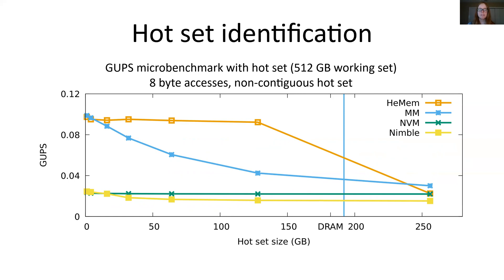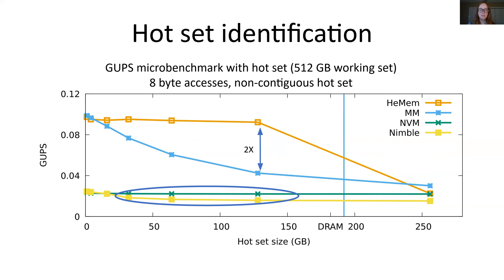This graph shows these results. On the y-axis is the average throughput in GUPS after the warm-up phase and the x-axis shows the size of the hot set. We see that HEMEM, plotted on the top orange line, does a good job at identifying the hot set and placing it in DRAM, resulting in up to two times increase in throughput over the next best system which is memory mode, plotted on the middle blue line. Memory mode suffers from conflict misses as a result of its simple direct map caching technique and cannot always keep the entire hot set in DRAM. Nimble, plotted on the bottom yellow line, suffers from its high overhead page table scanning approach and is unable to identify the hot set, with worse performance than simply keeping all memory in NVM, which is plotted on the green line. Once the hot set no longer fits in DRAM, signified by the vertical blue line, all systems see a drop in performance close to that of keeping all data in NVM.